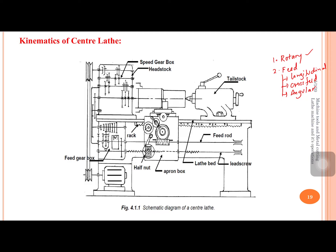Now let us discuss how to achieve the rotary motion for the work part, which is the cutting motion. At the bottom of the lathe we have the motor, connected via a belt-pulley connection to a high-speed gearbox. When the clutch is engaged, shaft one rotates and the motion is transferred to shaft two, then three, and finally to shaft four. Shaft four is the spindle of the headstock, on which the chuck is placed. The chuck holds and rotates the work part — this is the cutting motion.